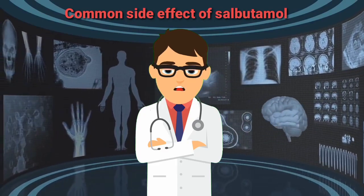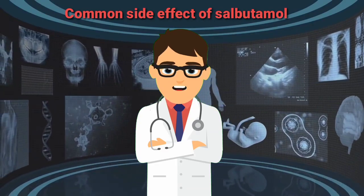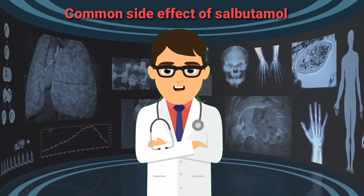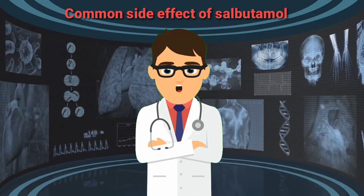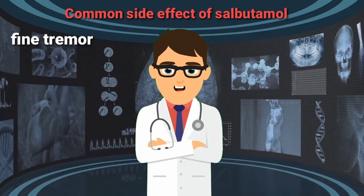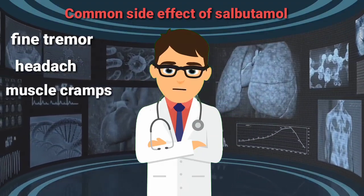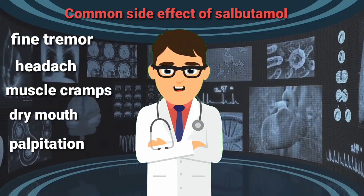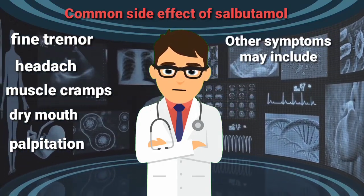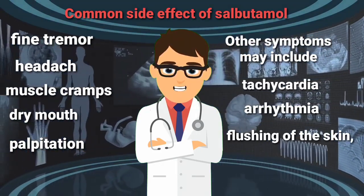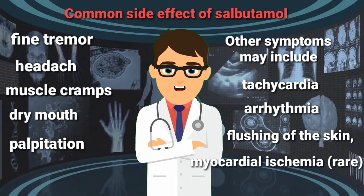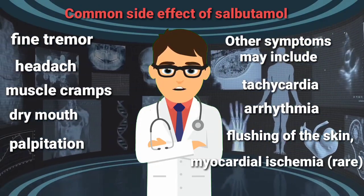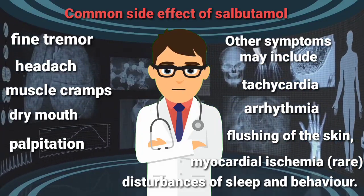The next question was: what are the common side effects of Salbutamol? The most common side effects are fine tremor, headache, muscle cramps, dry mouth, and palpitations. Other symptoms may include tachycardia, arrhythmia, flushing of the skin, and myocardial ischemia — which is rare — as well as disturbance in sleep and behavior.